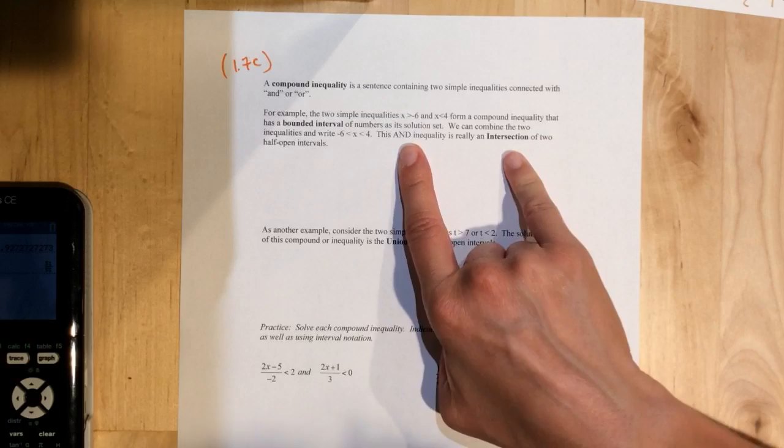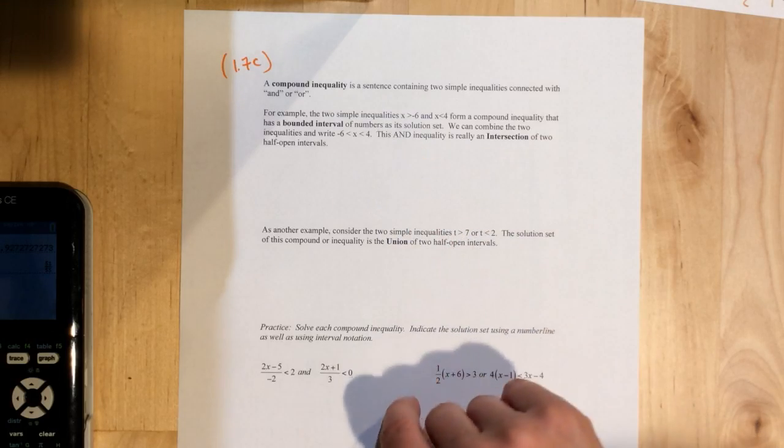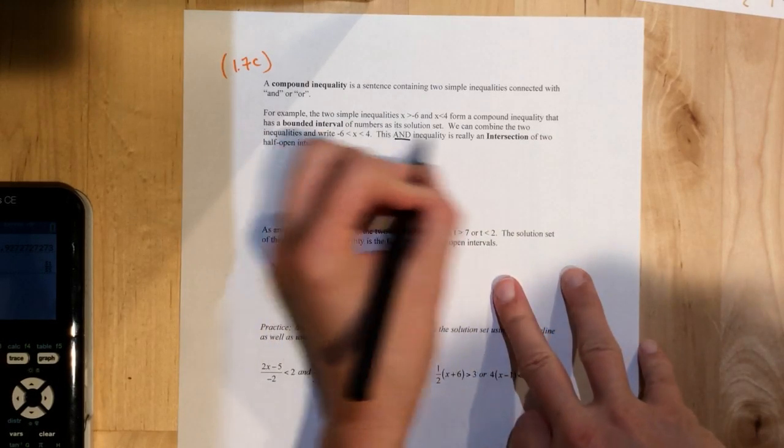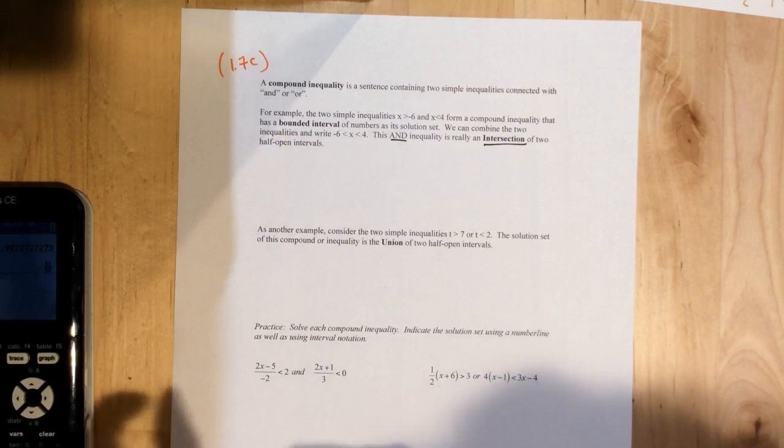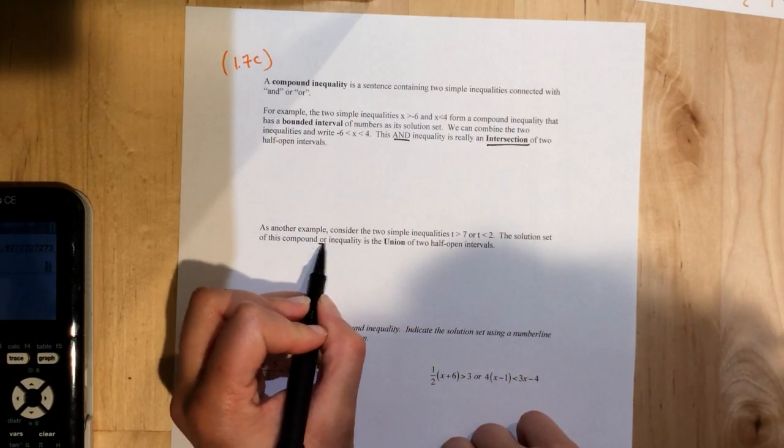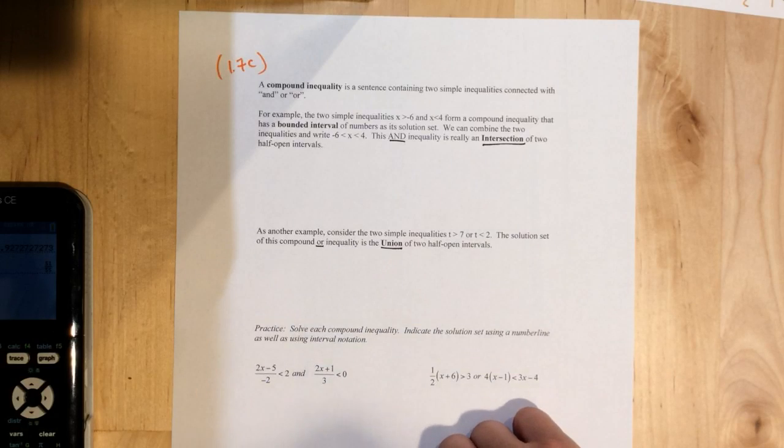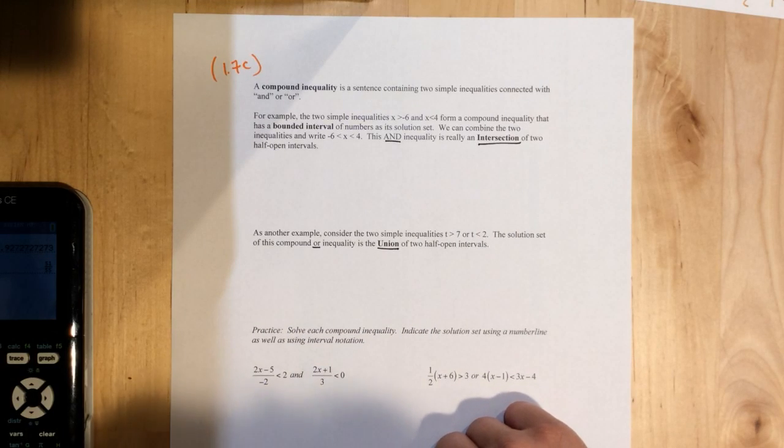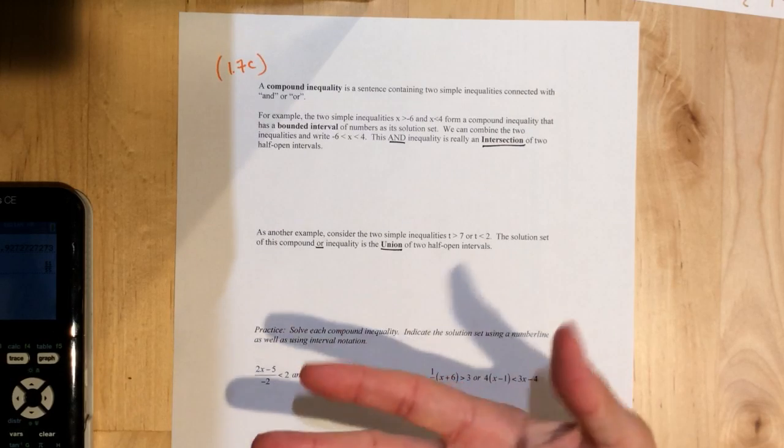And, which is an intersection. Then, we've got or, which is a union. So before we get into the nitty gritty of the math, I just want to talk about it in English.